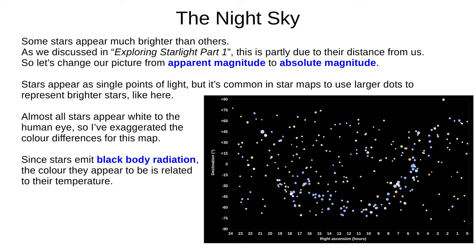Stars appear as single points of light in the night sky, but star maps generally use larger dots to represent brighter stars. Almost all stars appear white to the human eye, so I've exaggerated the colour differences here using standard astronomical colours. Stars emit black body radiation, or close to it, so their colour is related to their temperature. This map shows the stars' locations in the sky — let's sort them into something more useful.